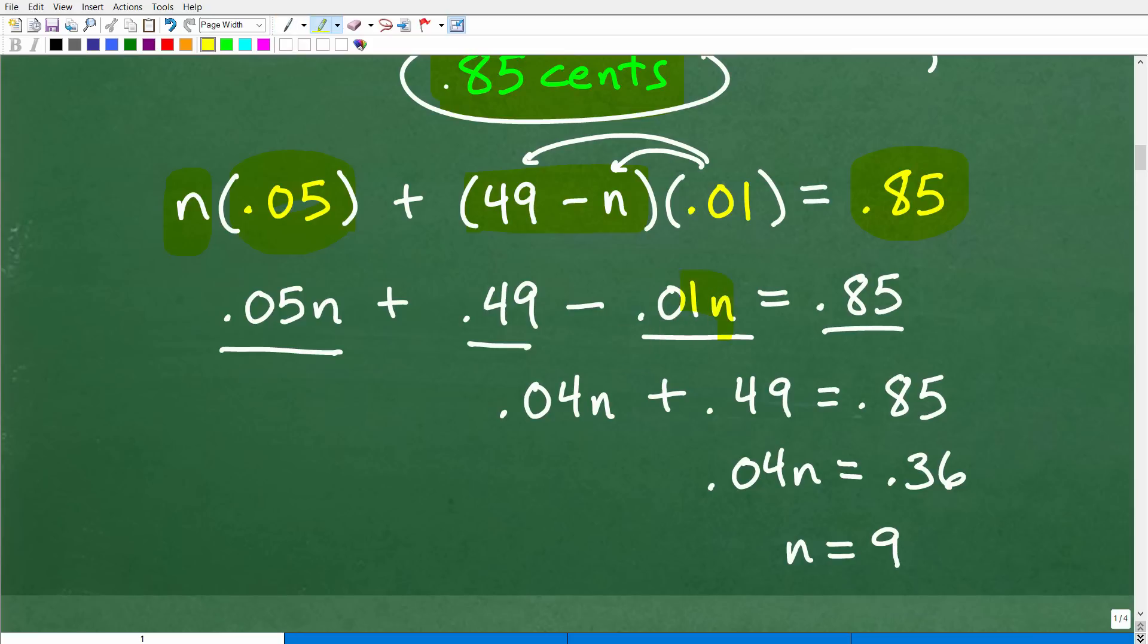All right, so what do we do now? Well, we're going to have to combine like terms. So this is a negative. Just to be very clear about this, this is a plus negative 0.01N. And I have a 0.05N here. I'm going to go ahead and combine these like terms. So 0.05N plus a negative 0.01N is 0.04N plus 0.49 is equal to 0.85.